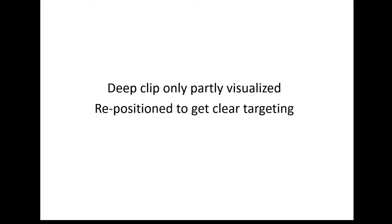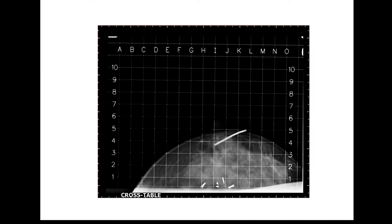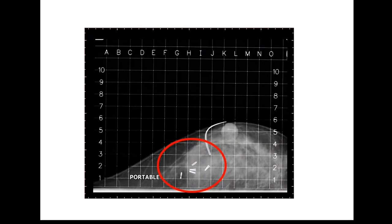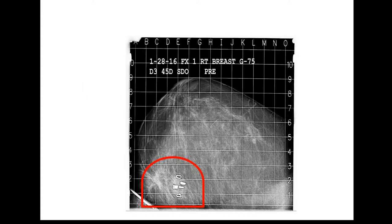For a situation where a deep clip is only partly visualized or off to the edge of the targeting film, we simply slightly reorient the gantry and make another attempt at compression — and more often than not these clips jump right into view. The inframammary fold location is another delicate area where electrons often result in less than ideal outcomes, but AccuBoost can quite effectively target at this depth.